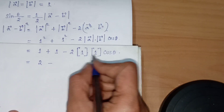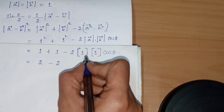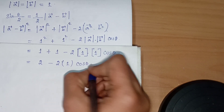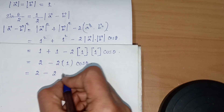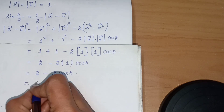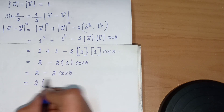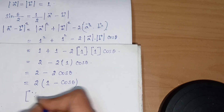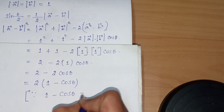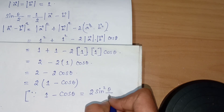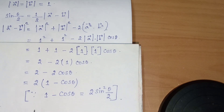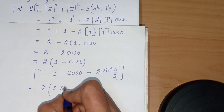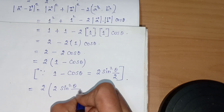So we have 2 minus 2 cos θ. Since the formula for 1 minus cos θ equals 2 sin²(θ/2), we substitute: 2 minus 2 cos θ equals 2 times (1 minus cos θ) equals 2 times 2 sin²(θ/2), which equals 4 sin²(θ/2).